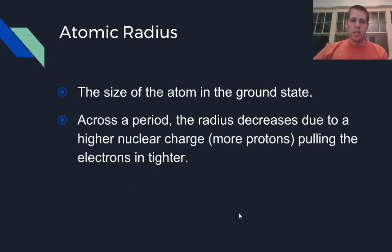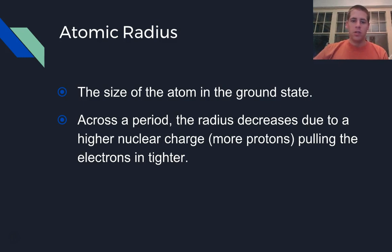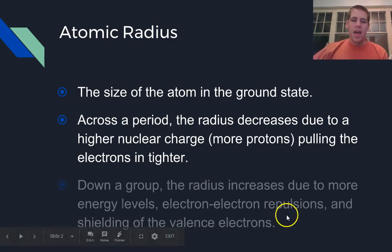The trend we see in the atomic radius is that when we go across the periodic table — across a period or a row — the radius of the atoms decreases. This is simply because we're adding more protons to the center of the nucleus, increasing the nuclear charge and pulling on those negative electrons a little bit stronger for every proton that we add.